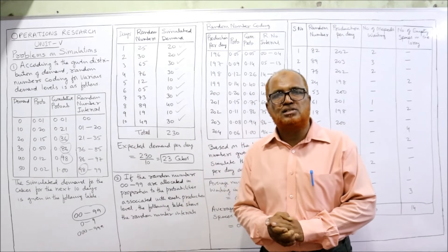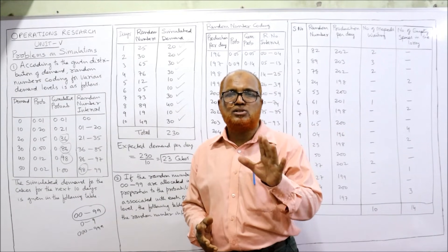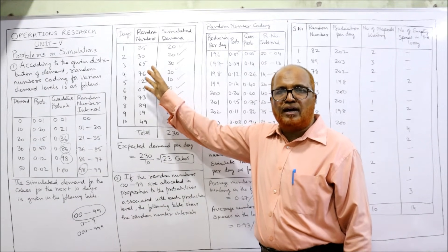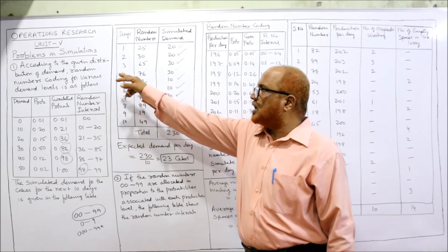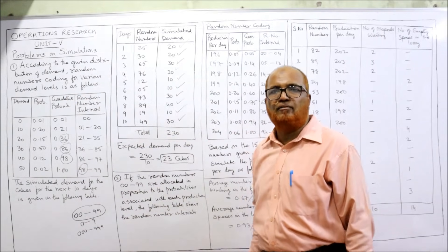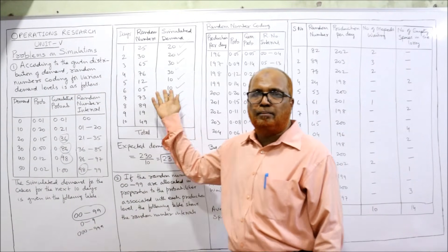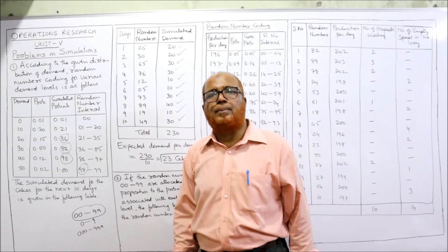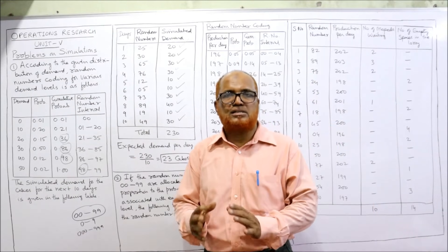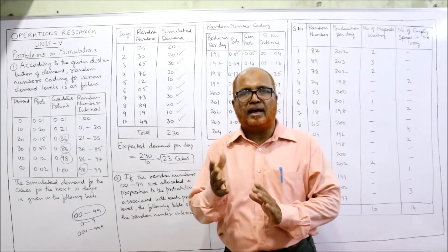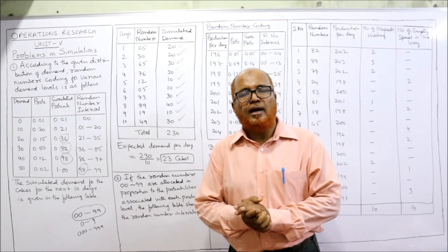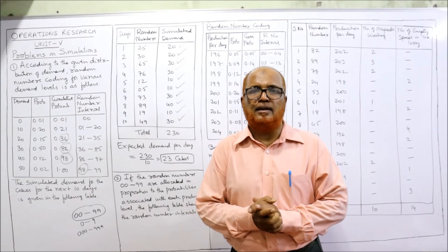In this video, two problems on simulation have been explained. The key steps are: first, know how to give random number coding; second, locate where each random number falls in which class interval; and against that interval, the corresponding variable value is the simulated result. We calculated simulated demand in problem one and simulated production in problem two. The next problem will be covered in the next video.